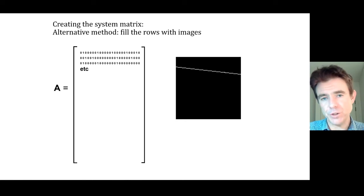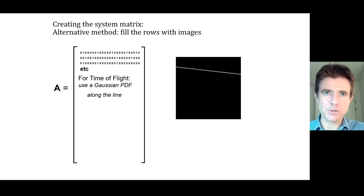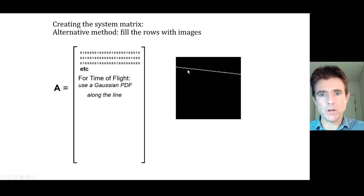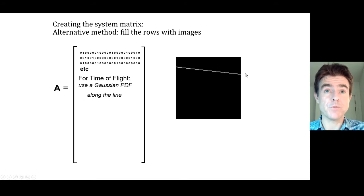You can consider all the various lines of response through the scanner field of view, and that's how you populate the rows of a system matrix for doing a discrete X-ray transform. System modeling is extremely flexible. For example, if we had time-of-flight information for the PET photons, we could just do a Gaussian probability density function along that line. Instead of being a solid line with roughly the same value throughout, according to the arrival time difference we could have a Gaussian-modulated weighted integral along the line, and that would model the time-of-flight data.